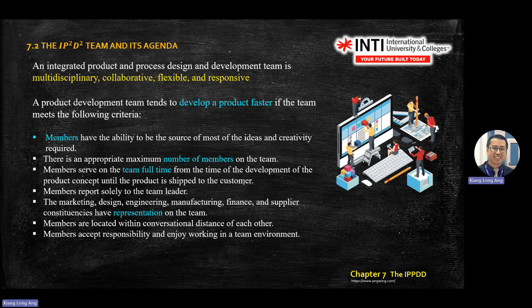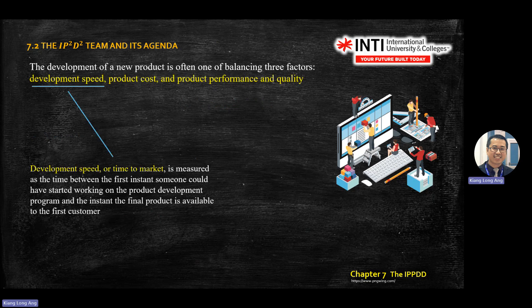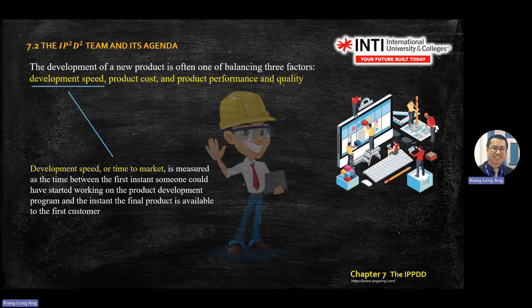IPPDD — Integrated Process Design and Production — requires criteria such as communication and full-time team members to develop products faster. There are three factors for new products that must be balanced: development speed, product cost, product performance, and quality.